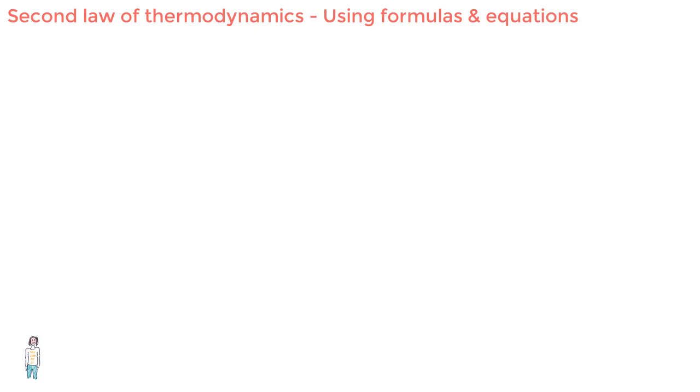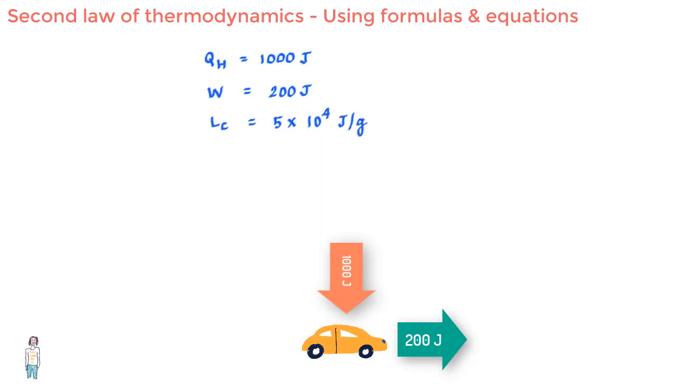So say a car engine takes in 1000 joules of heat and delivers 200 joules of mechanical work per cycle, and the heat is provided by burning gasoline that has heat of combustion LC equal to 5 times 10 to the power 4 joules per gram.